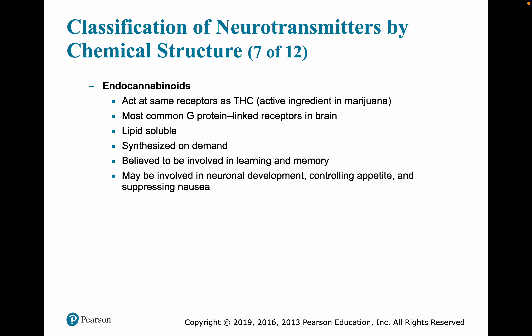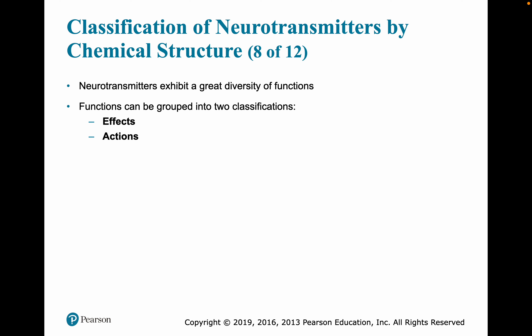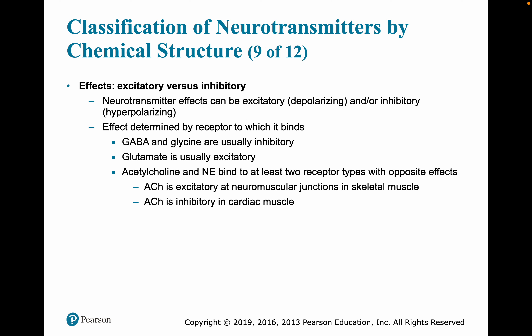Endocannabinoids act on the same receptors as THC, the active ingredient in marijuana. They mostly use G-protein-linked receptors, are lipid-soluble, synthesized on demand, believed to be involved in learning and memory, and may be involved in neuronal development, controlling appetite, and suppression of nausea. We can also group neurotransmitters by their effects or actions. For effects, we have excitatory versus inhibitory — they can depolarize or hyperpolarize cells, determined largely by the receptor the neurotransmitter binds to. GABA and glycine are usually inhibitory; glutamate is usually excitatory. Acetylcholine and norepinephrine have two different receptor types with opposite effects.